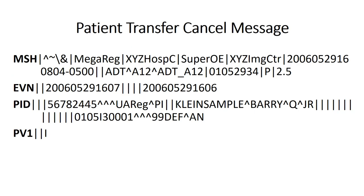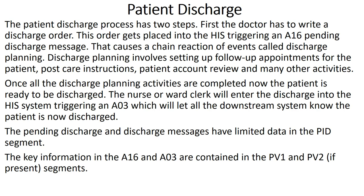Here is an ADT A12. Once you see A12, you know it's a cancellation of a transfer. You can identify the patient by their MRN, name, and account number. All you see in PV1 is that this patient is an inpatient. The transfer cancellation is a little tricky to spot, but once you see ADT A12, you know it's a cancel transfer message.